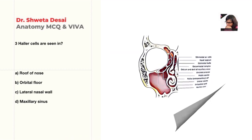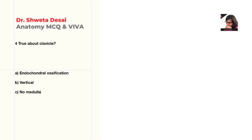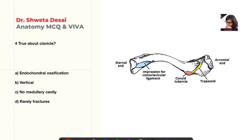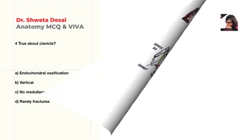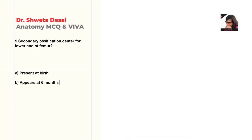Next: true about clavicle — options include endochondral ossification, vertically placed, no medullary cavity, or rarely fractures. The correct answer: clavicle has no medullary cavity.